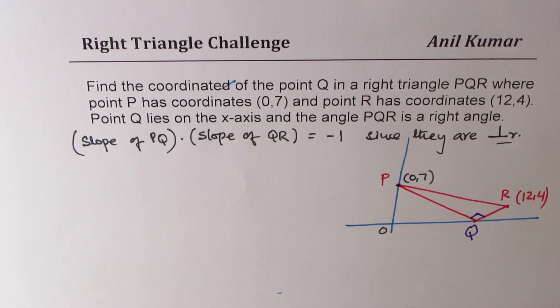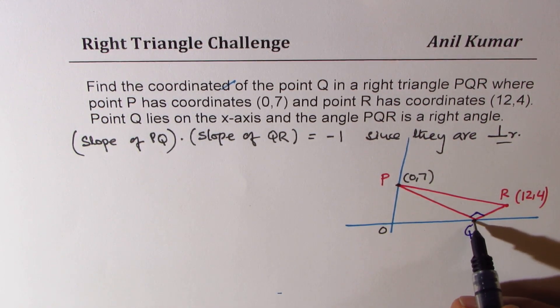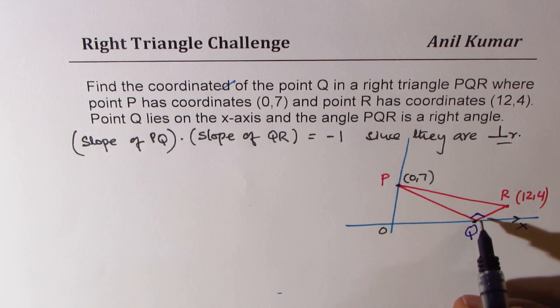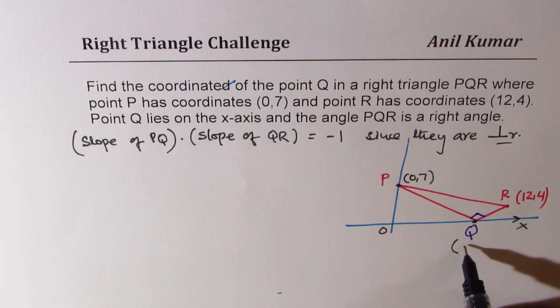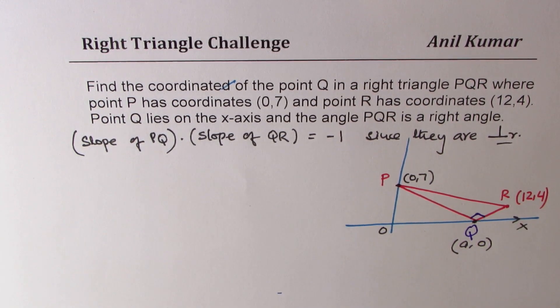So that becomes an equation which can be solved for Q. Since it is on the x-axis coordinates of Q could be let's say a comma 0. So y value is 0. Now it is simple.